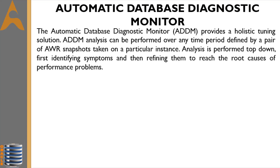The goal of the analysis is to reduce a single throughput metric called DB time. DB time is the cumulative time spent by the database server in processing user requests — it includes wait time and CPU time of all non-idle user sessions. DB time is displayed in the V$SYS_TIME_MODEL views. By reducing DB time, the database server is able to support more user requests using the same resources, increasing throughput.